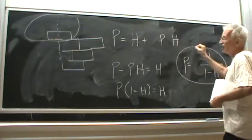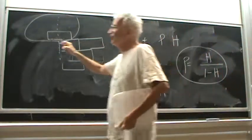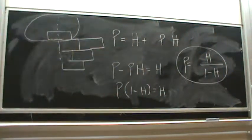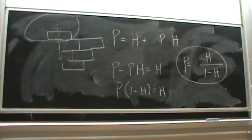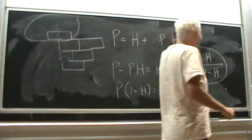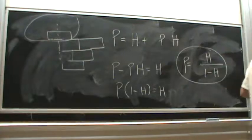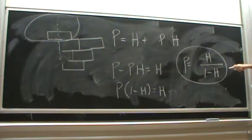So if you were to use the quadratic equation to get an explicit expression in terms of radicals — square roots of h of z — you can plug it in here and get another expression with radicals.